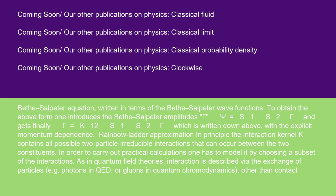To obtain the above form, one introduces the Bethe-Salpeter amplitudes gamma psi equals S1S2 gamma and gets finally gamma equals K12S1S2 gamma, which is written down above, with the explicit momentum dependence.